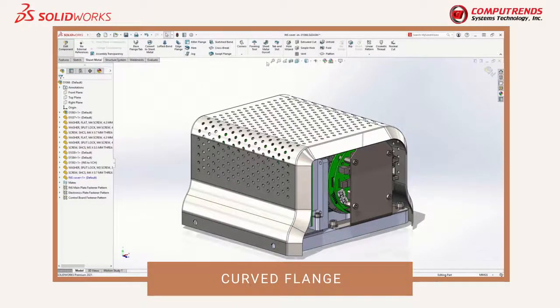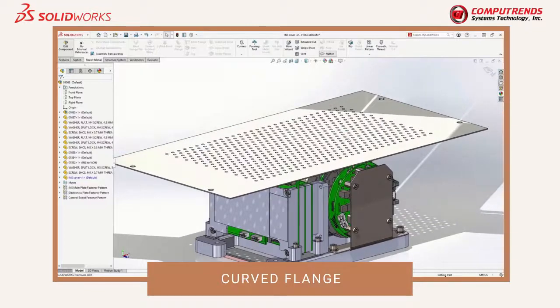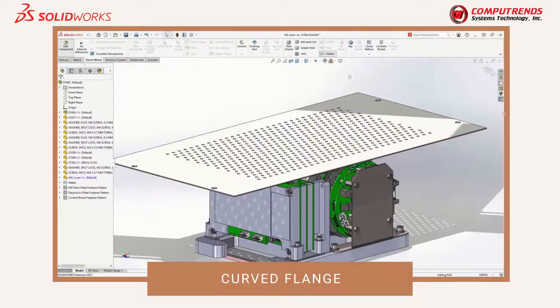This new edge flange capability along non-linear edges extends the robust sheet metal capabilities of SOLIDWORKS 2021 for many applications, such as adding stiffening ribs and enclosures.